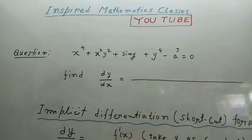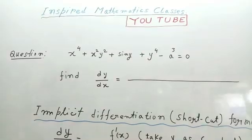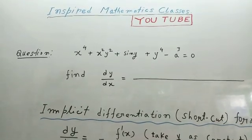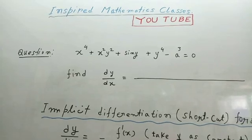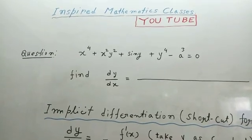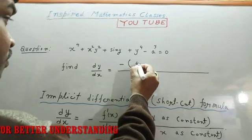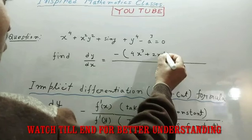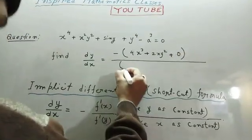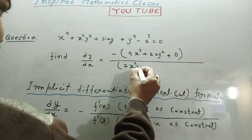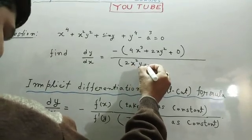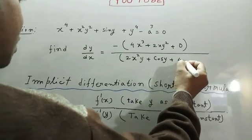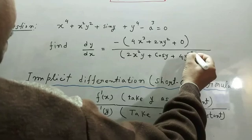Welcome to Inspire Mathematics Classes. Derivatives are very easy — let's have a look. My answer is minus 4x³ plus 2xy² plus 0, upon 2y² plus cos y plus 4y³.